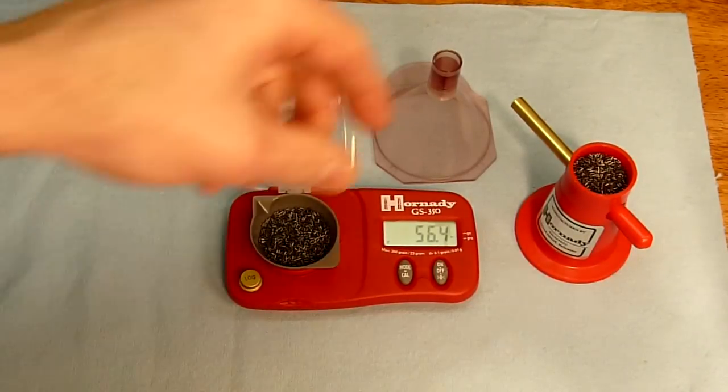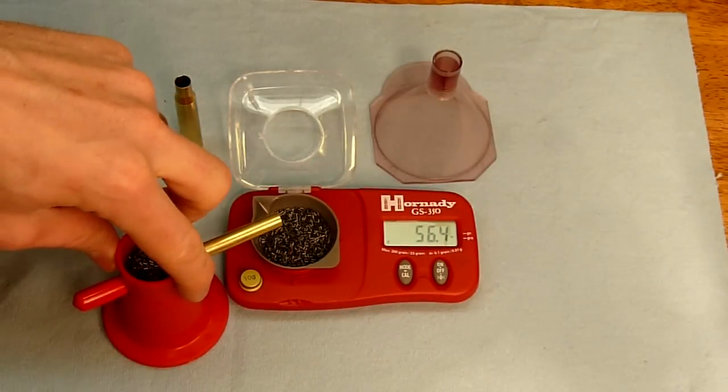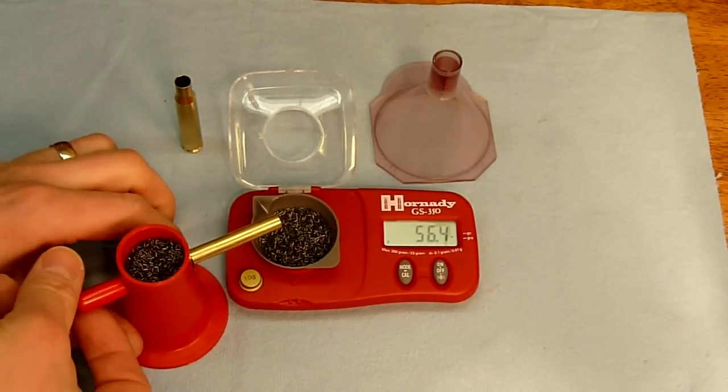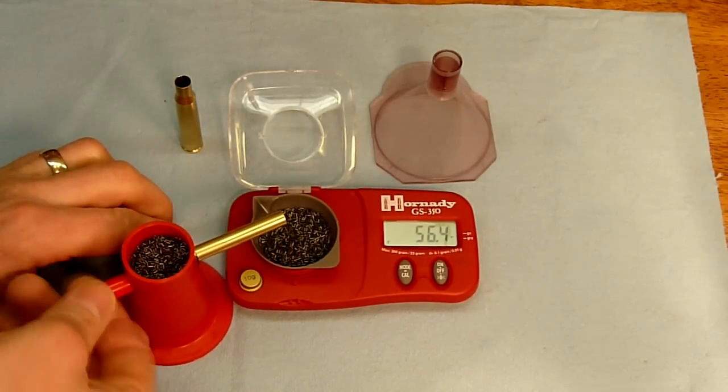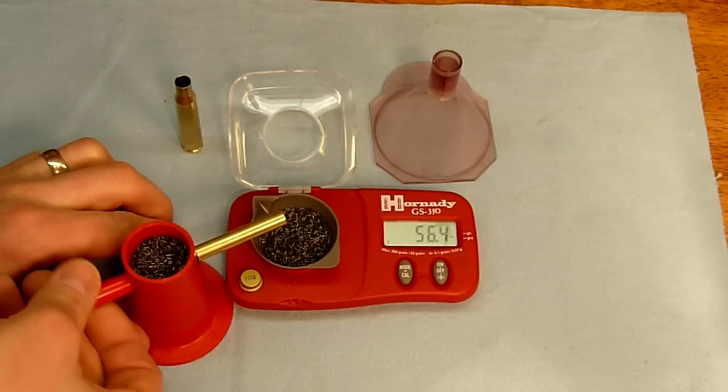Now let's say we want 60 grains here. What we'll do is put our trickler in place, and then we'll just twist the handle until we get the proper quantity of powder.